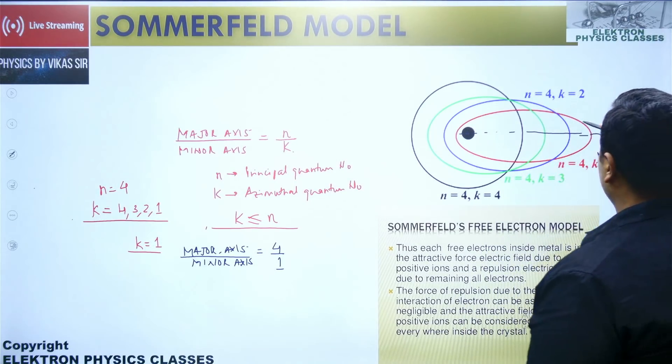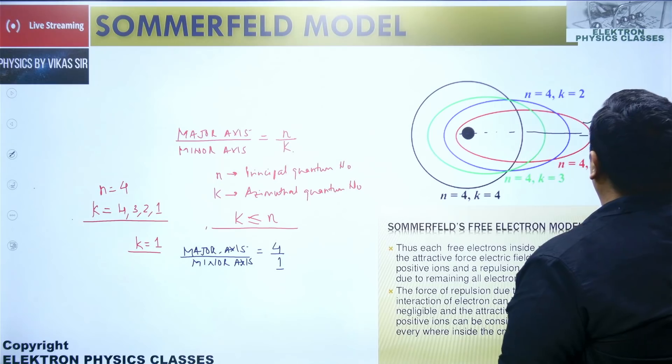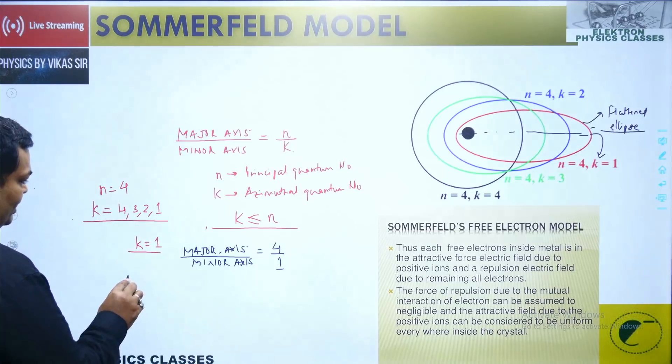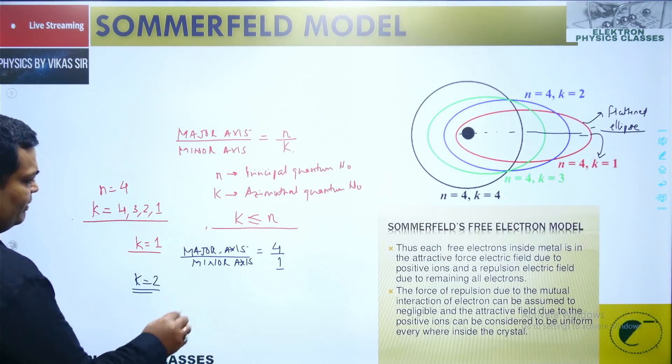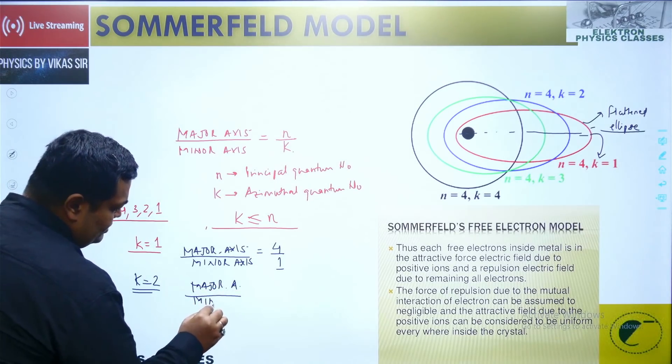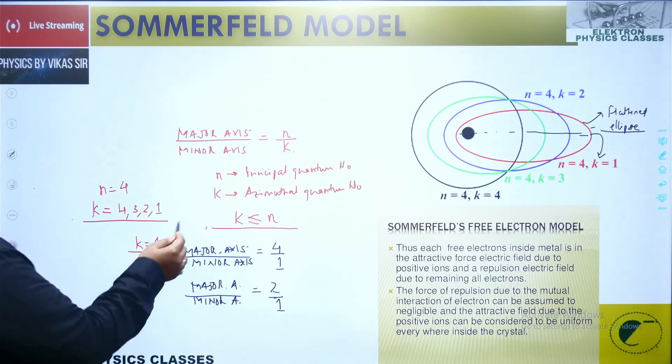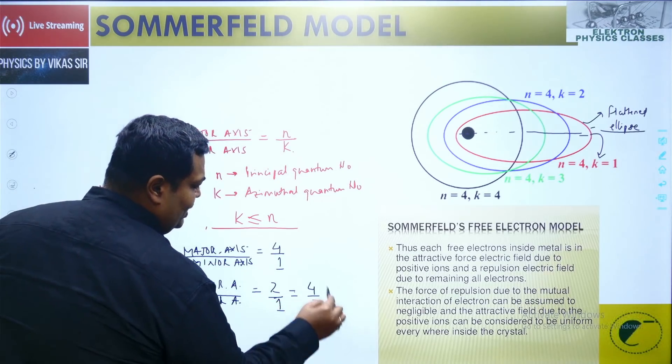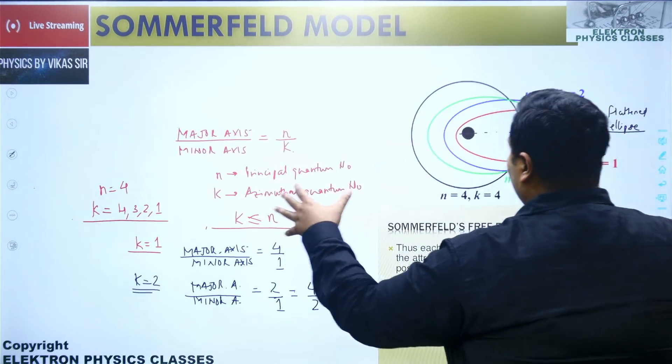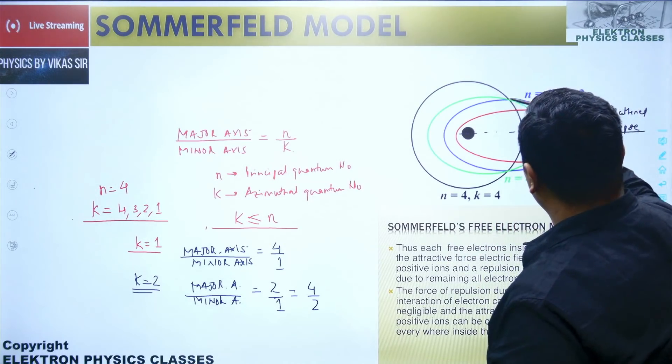If you want to improve upon the ratio, let's pick up the value for k equal to 2. So the major axis upon the minor axis becomes equal to 4 is to 2, that becomes 2 upon 1. The k value is 2 and n value is 4, so that's 2 to 1. So now the flattened behavior starts to improve and now I'm going to get this as the blue one, that is n equal to 4, k equal to 2.